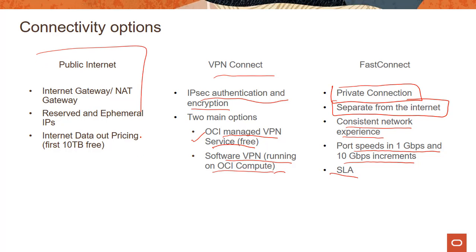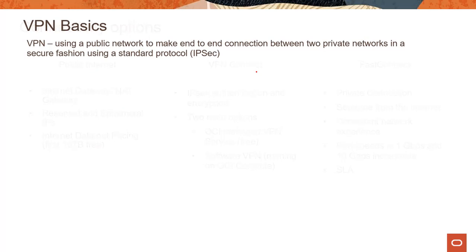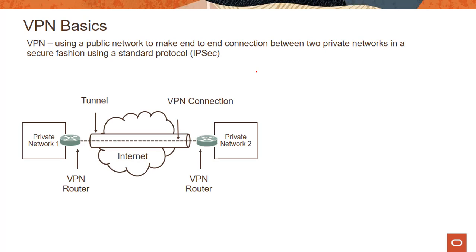The first option — public internet — was covered in the previous module on virtual cloud network. In this particular module, we are going to look in more detail at VPN and Fast Connect. VPN basically uses a public network to make an end-to-end connection between two private networks in a secure fashion using a standard protocol like IPsec.